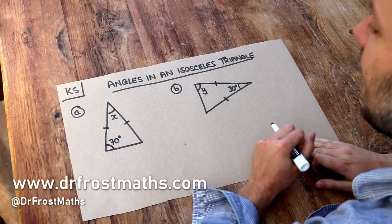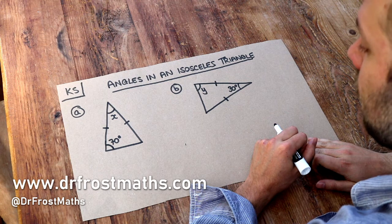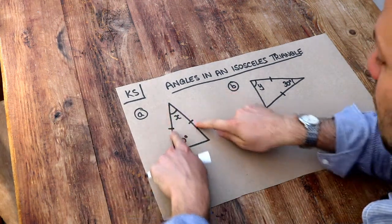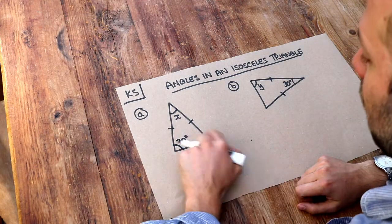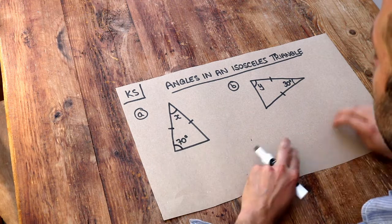Hello and welcome to this Dr Ross Math's key skill video on angles in an isosceles triangle. Now an isosceles triangle is where two of the sides of the triangle are the same length and we usually use a mark to indicate when sides are the same length.